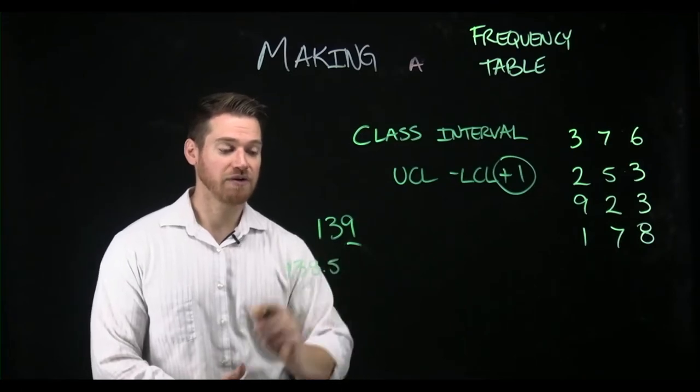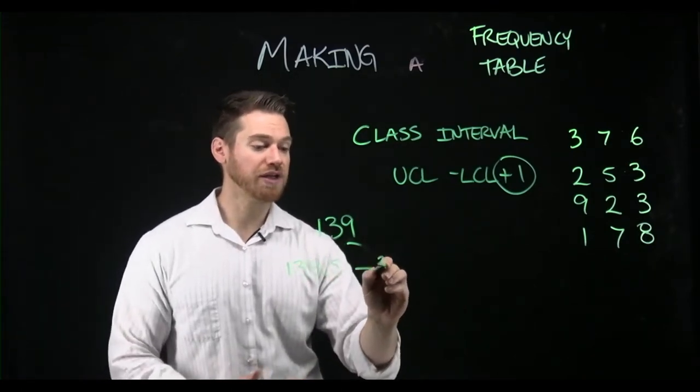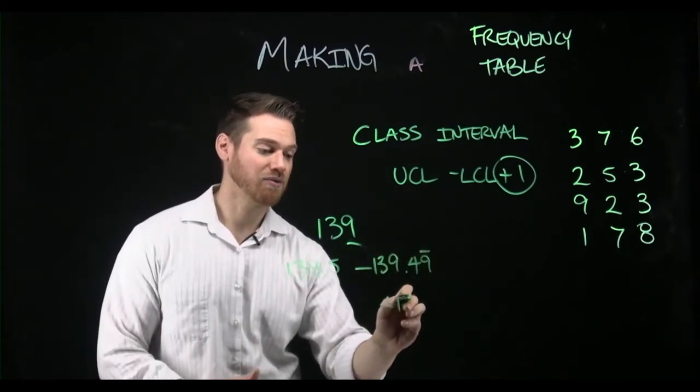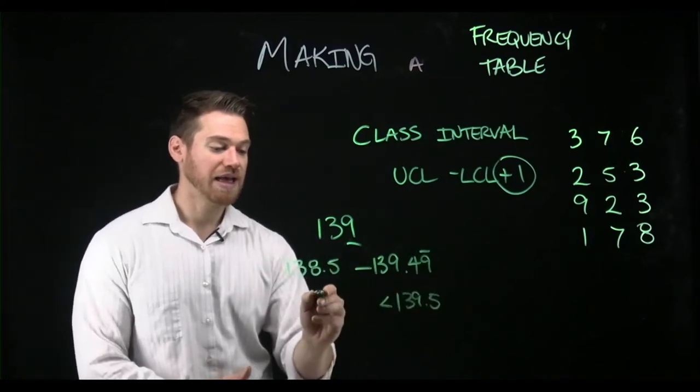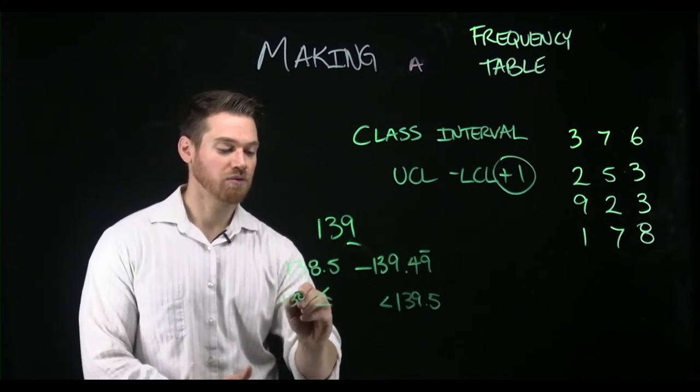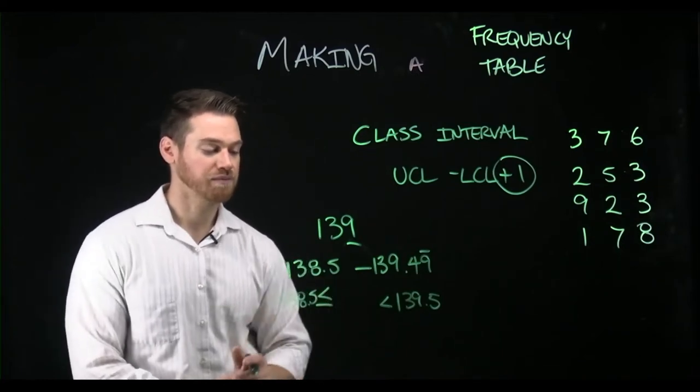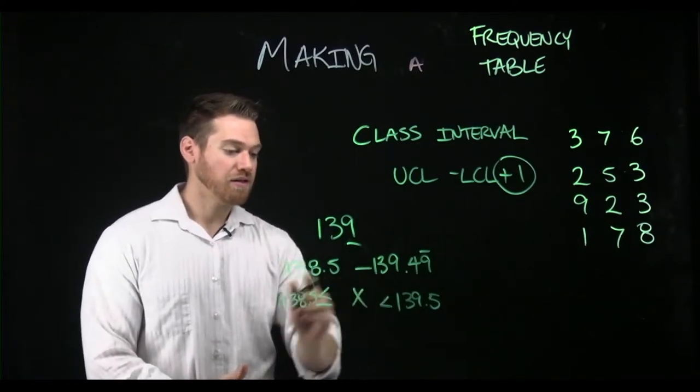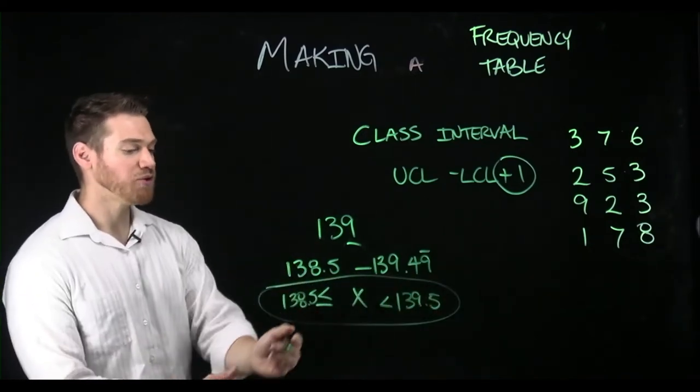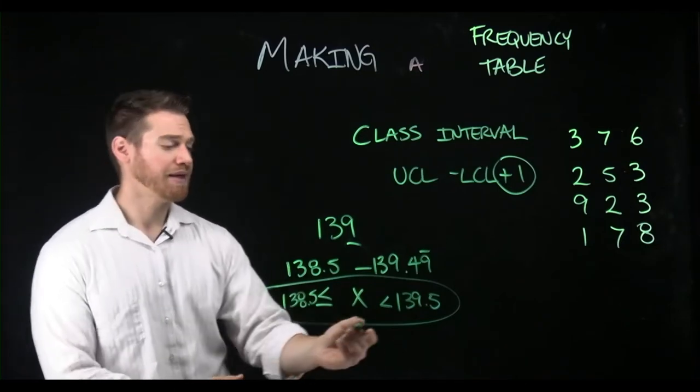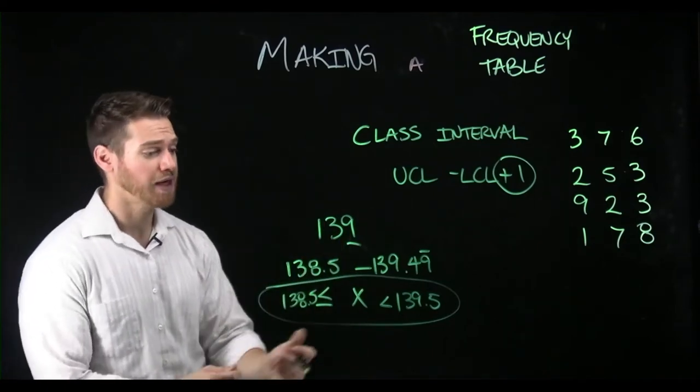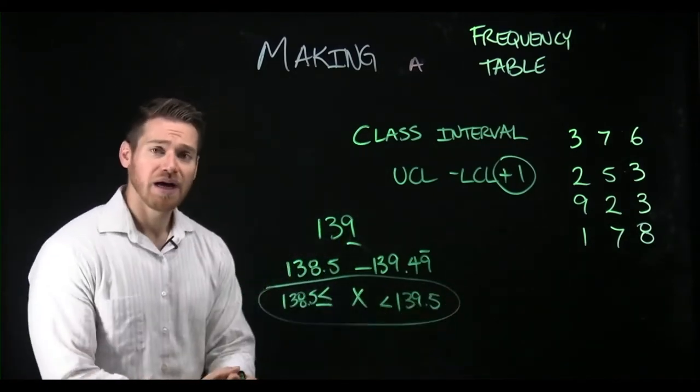The fact of the matter is that any number that is 138.5 through 139.49, basically less than 139.5 and greater than or equal to 138.5. If you had 138.5 it would round to 139, and if you were less than 139.5 but greater than or equal to this it would also round to 139. Basically there's a span of a point here that are the real limits on this value.